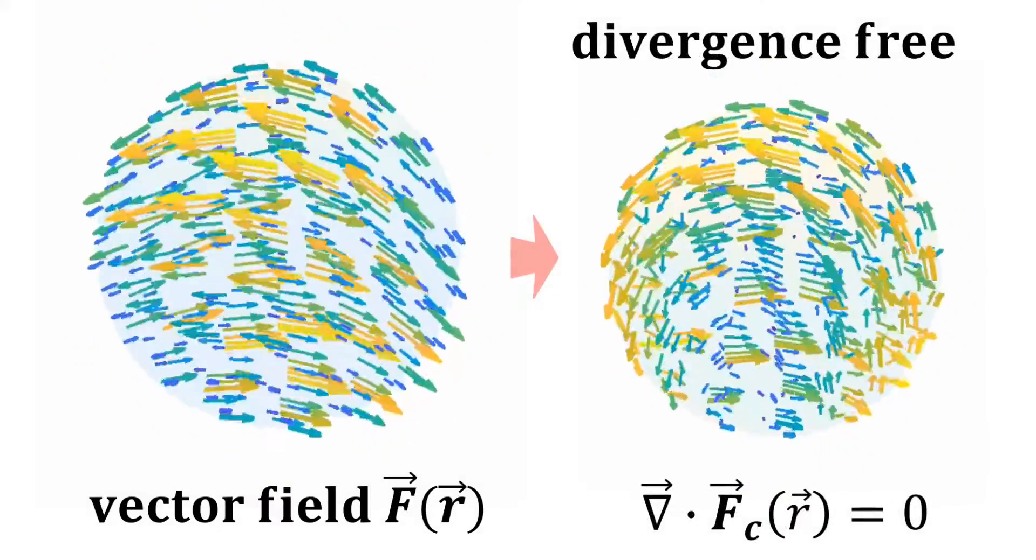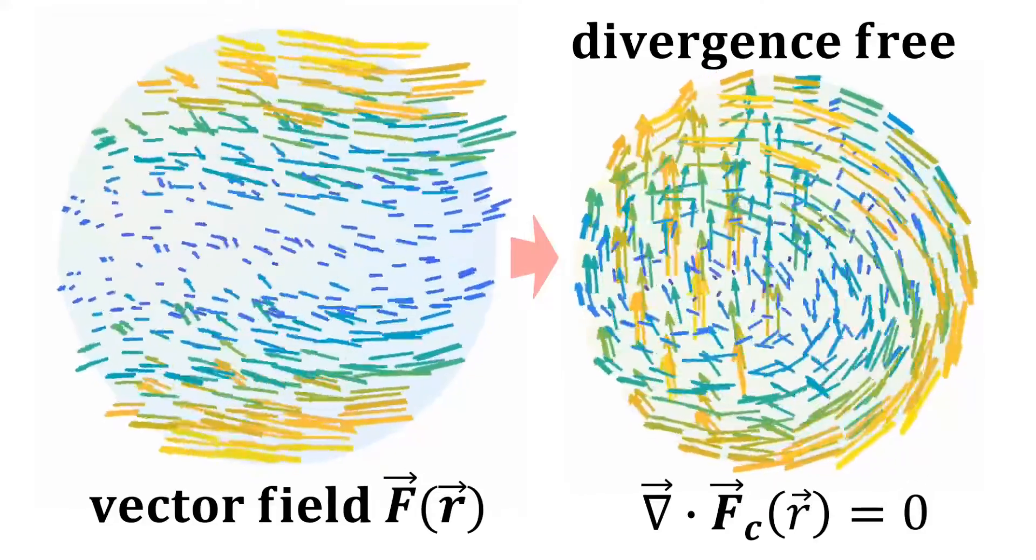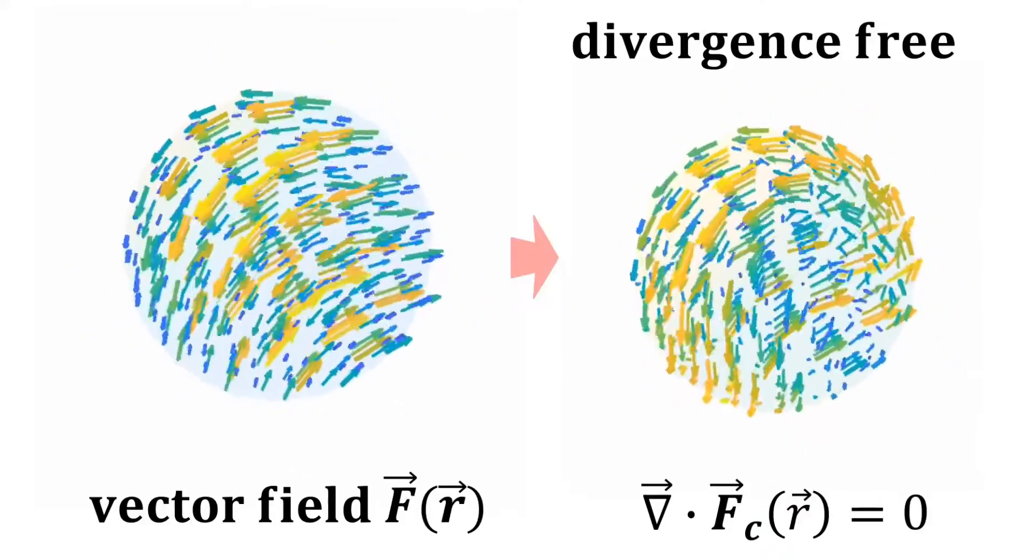Second we have the divergence-free component, which is the component that is solenoidal, or curling. In the literature, we also call this the transverse component.